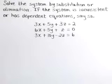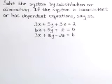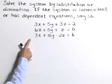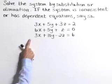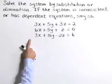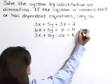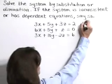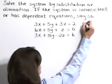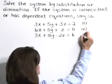Solve the system by substitution or elimination. If the system is inconsistent or has dependent equations, say so. Here we have a system of three equations and three unknowns. Let's start by identifying these as equations one, two, and three.